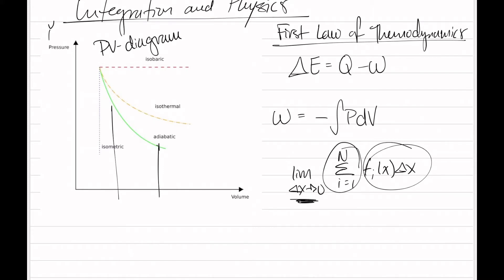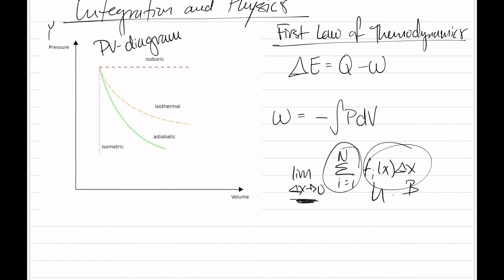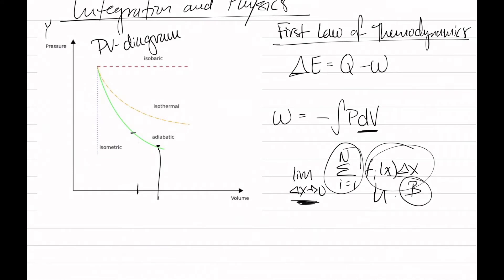The reason you're doing that is because if we know the area of a rectangle — which is the base times the height — then if we have an infinite amount of rectangles, that will give us the best approximation of the area under the curve. In order to decrease the area of the rectangle, we need to decrease the base. The height here is actually the pressure at any given volume, and the base is going to be the volume — more specifically, our change in volume.